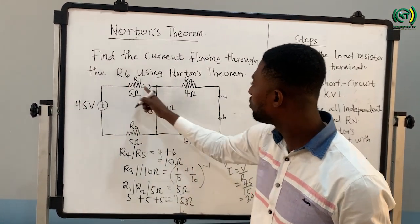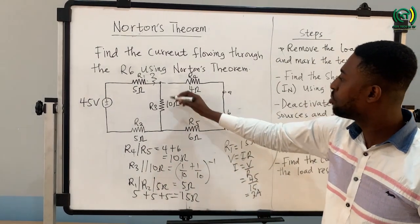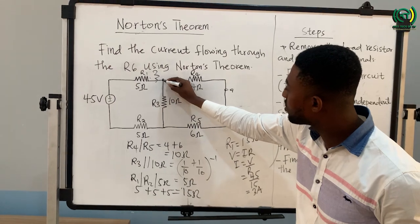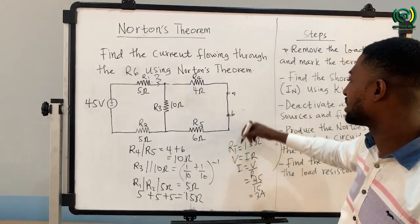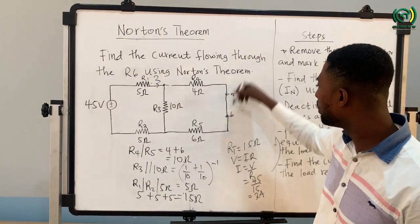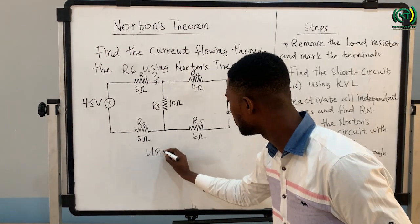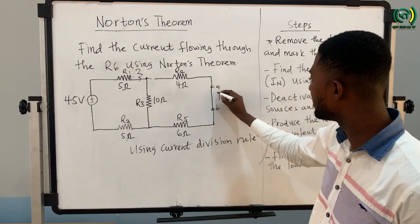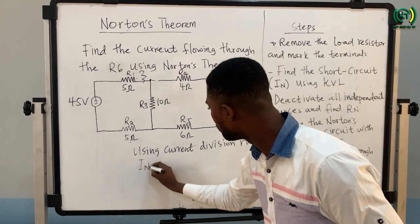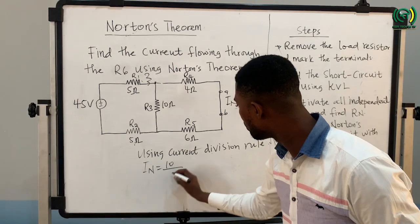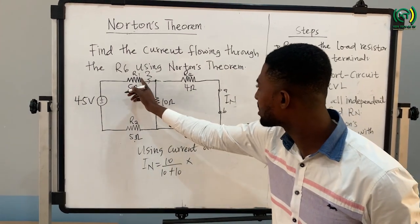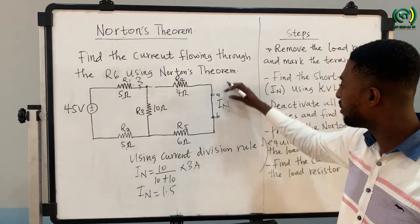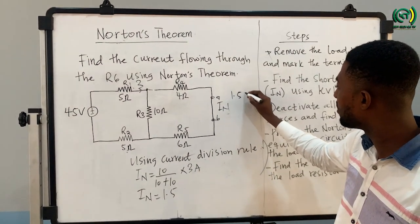The 3 amps flows through R1, and when it reaches the junction it will split, because from Kirchhoff's current law the current entering the junction equals the current leaving. To calculate the current flowing to the short-circuited path, we use the current divider rule to find the current flowing through the terminal A to B, which is IN. IN equals 10 over (10 plus 10) multiplied by the source current of 3 amps, giving IN equal to 1.5 amps. The current flowing through the short-circuited path is 1.5 amps.